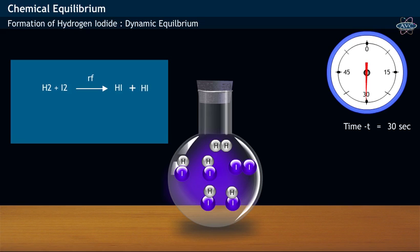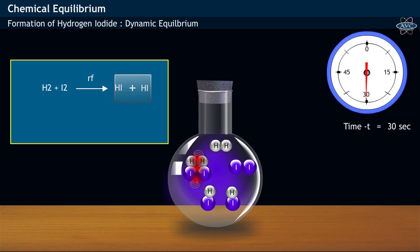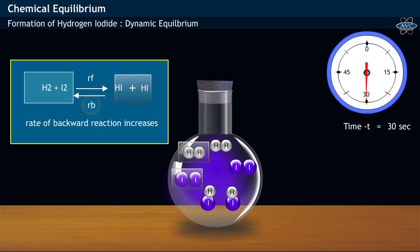Now, at this point, two Hydrogen Iodide molecules collide with each other and thereby form the reactants Hydrogen and Iodine. That is, the rate of backward reaction increases.